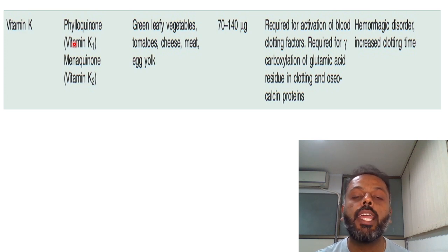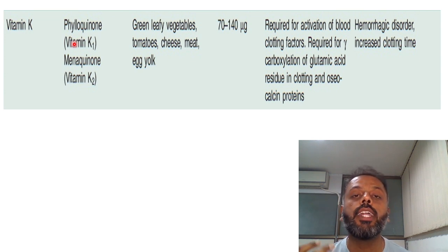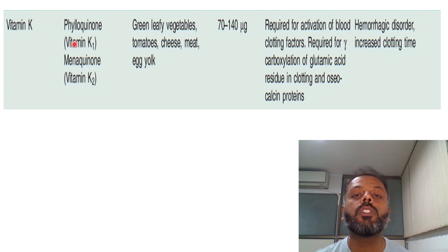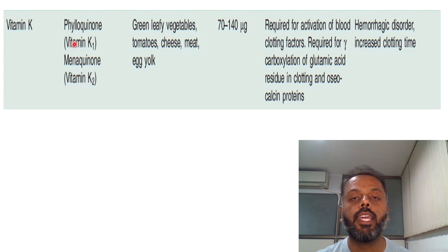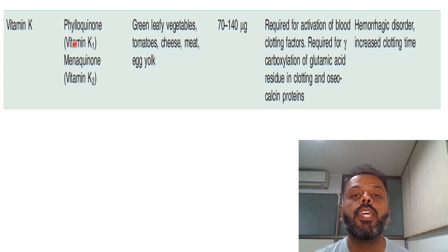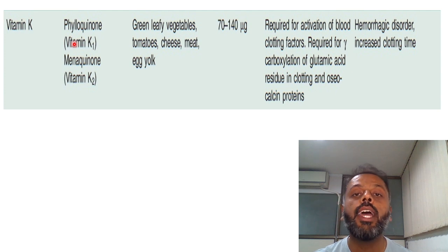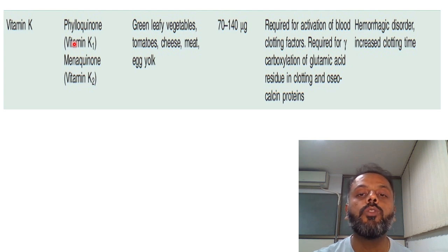Vitamin K plays an important role in blood coagulation — it is required for the activation of clotting factors. There are four important vitamin K-dependent clotting factors: factors 2, 7, 9, and 10. Vitamin K plays an important role in the gamma-carboxylation of glutamic acid residues of these clotting factors. Deficiency of vitamin K leads to increased bleeding and clotting time, and various hemorrhagic disorders in newborn infants, because the liver is immature, the gut is sterile, and breast milk contains very low amounts of vitamin K. The daily requirement of vitamin K is 70 to 140 micrograms.